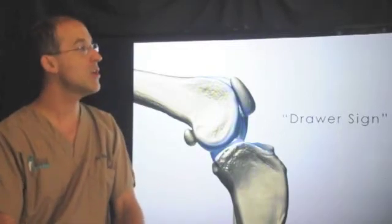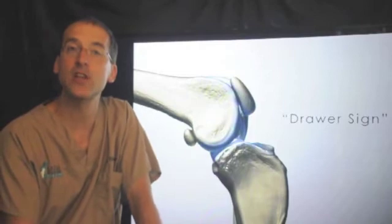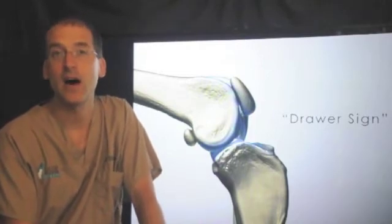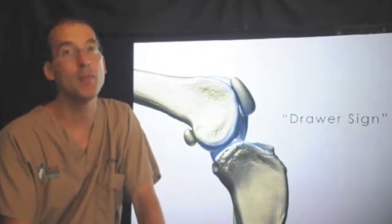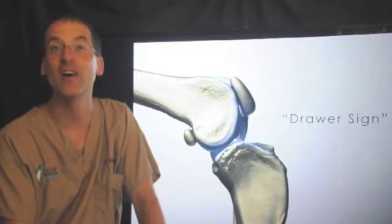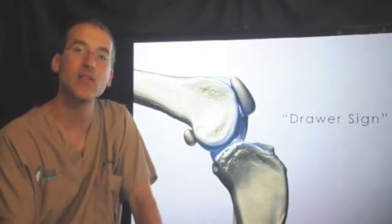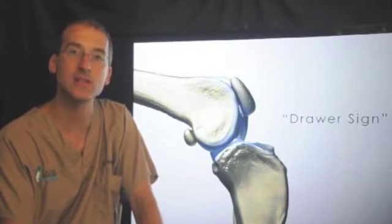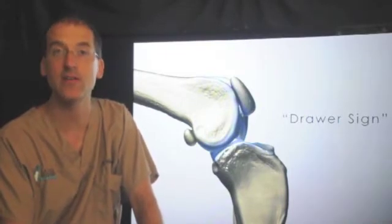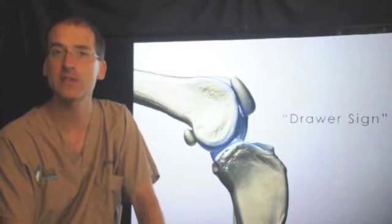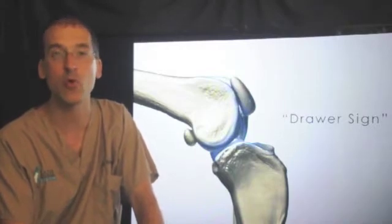The typical signalment or presentation is a small, medium, or large breed - basically any dog. The ages we see are typically three to eight years, although we certainly see dogs as young as a year of age or even younger, and we see some older dogs - 10, 12, even 14 years of age.